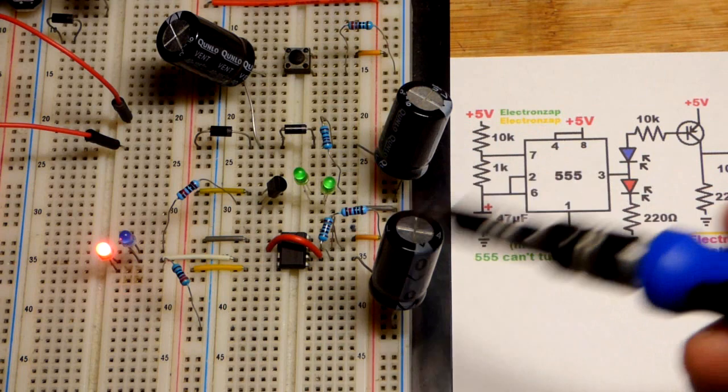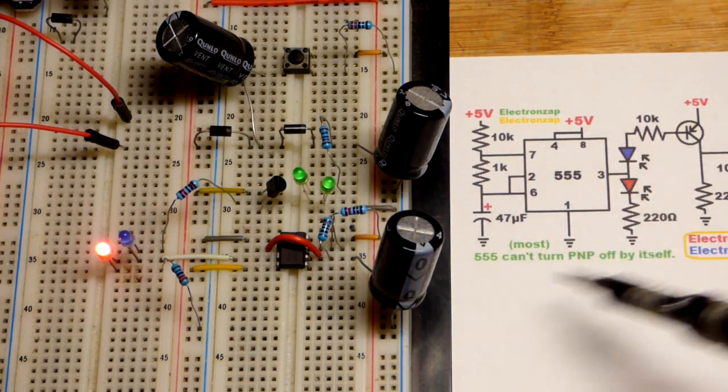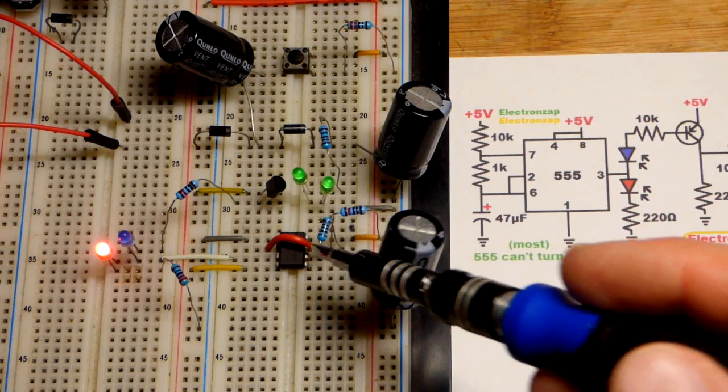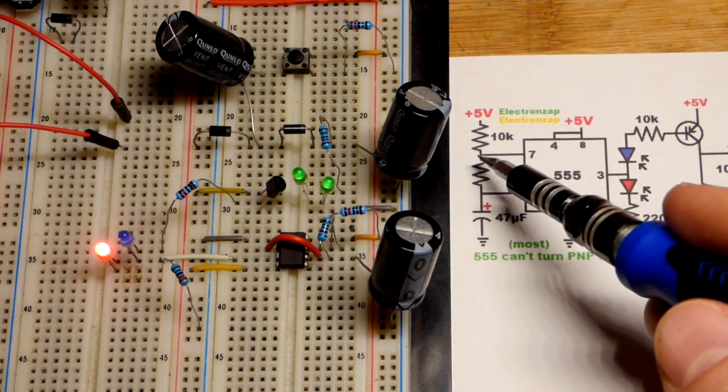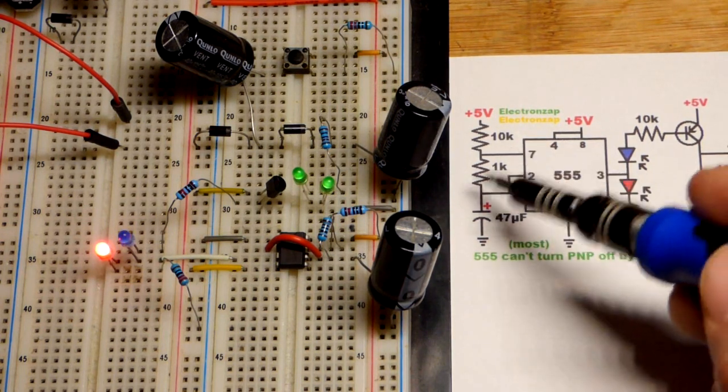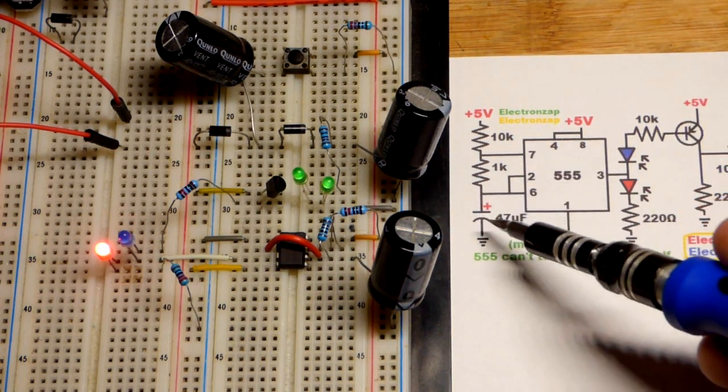So for the timing I got a 10,000 ohm resistor I've done other astable mode 555 timer circuits so we're not going to zoom in and get a close up look. But 10,000 ohm resistor to pin 7 and then 1,000 ohm resistor from 7 to 6 and 2 and the capacitor.